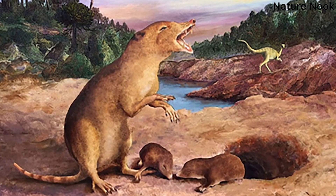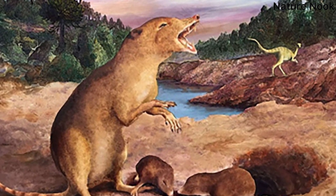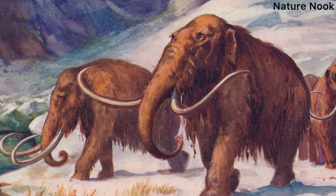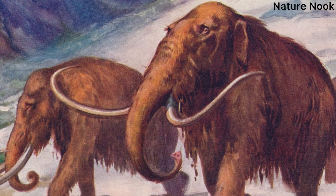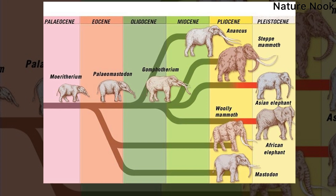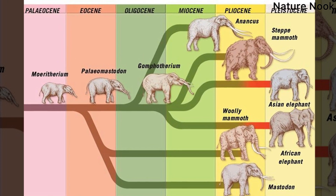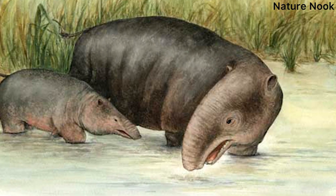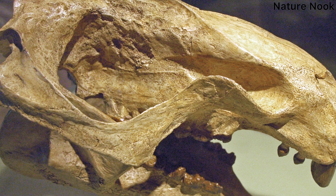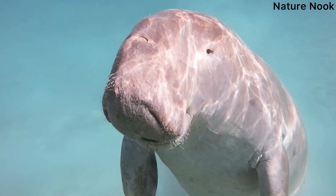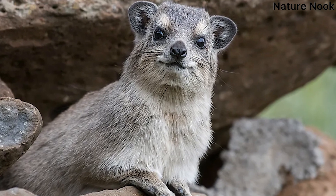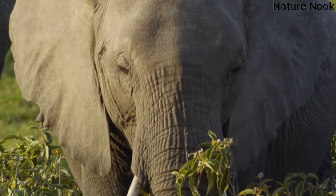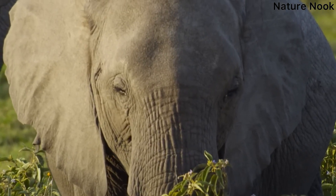Mammals originated around 180 million years ago from a reptilian lineage, around the same time as dinosaurs. The genetic lineage of elephants split from primates approximately 80 million years ago, with the tree shrew being our closest known common ancestor. It is believed that moerithiriums, which were about the size of pigs, were the earliest ancestors of proboscideans around 50 to 60 million years ago. Both morphological and biochemical evidence suggest that manatees, dugongs, and hyraxes are the closest living relatives of present-day elephants, which is remarkable considering the significant differences in their size, appearance, and habitat.